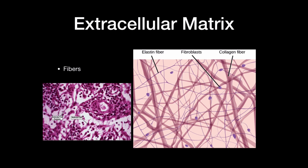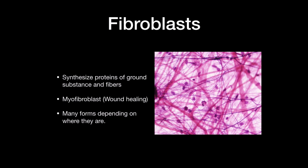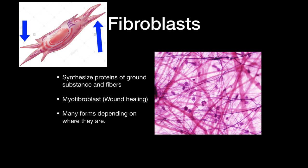It's important to have background knowledge about fibroblasts before covering the fibers in detail. Fibroblasts are the predominant cell type in connective tissue fibers and synthesize proteins for ground substance and fibers. They have many functions, including a role in wound healing where they become myofibroblasts, which contract the wound and help close it. Fibroblasts also take many forms depending on location, and have cell processes just like the mesenchyme.